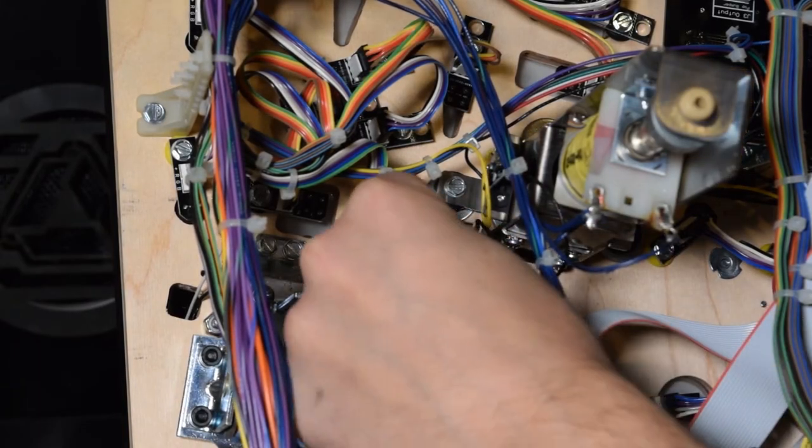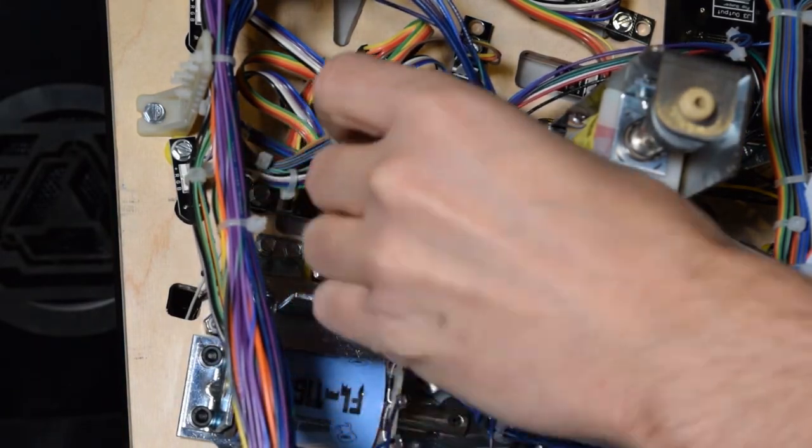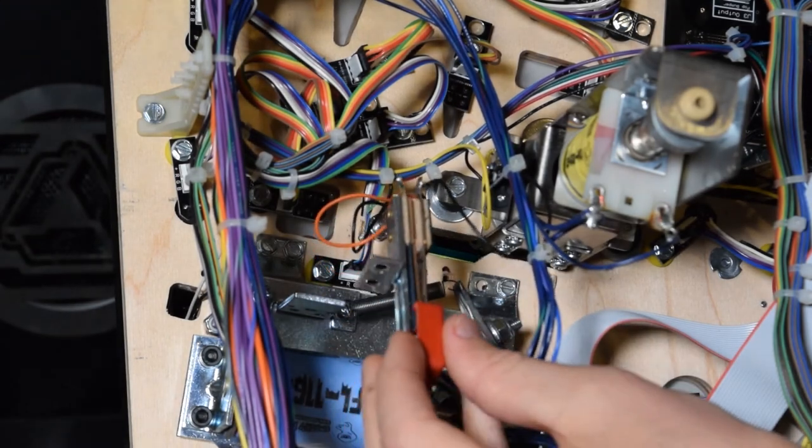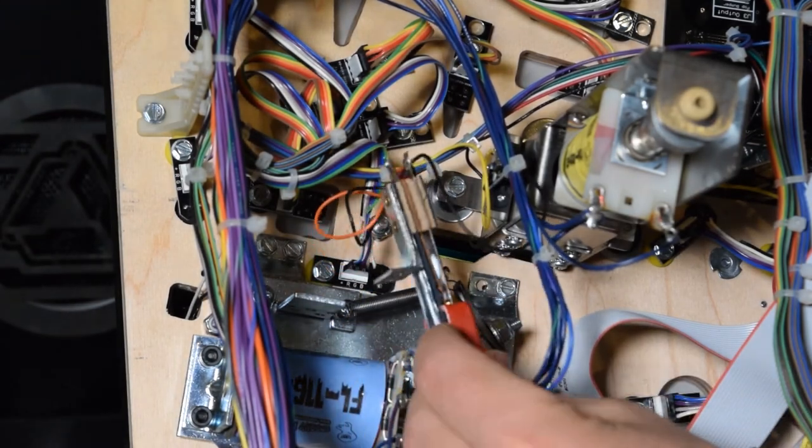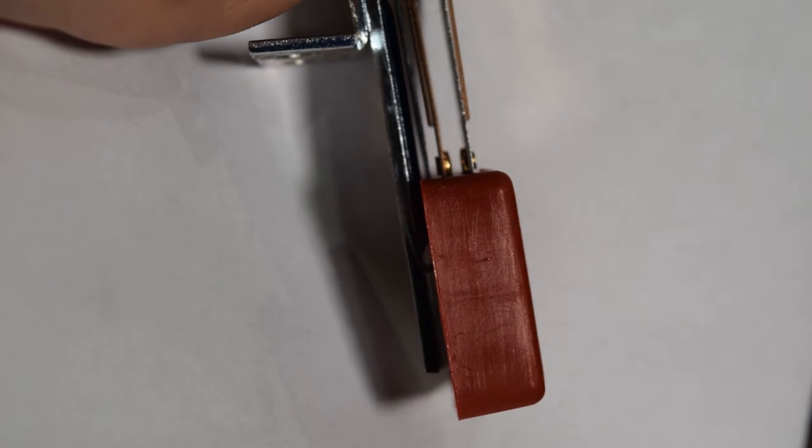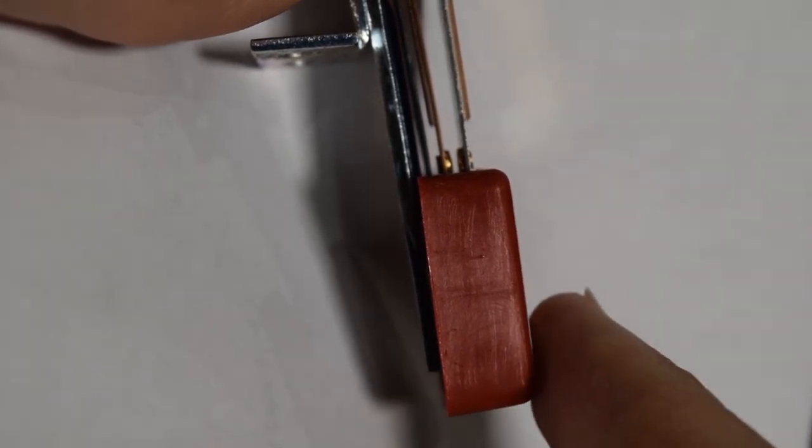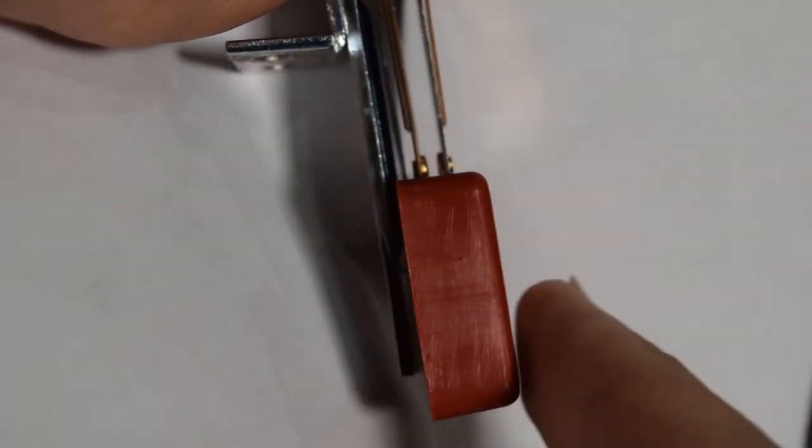Gently slide the target out of the playfield. Since the stand up target is soldered to the wiring harness, be gentle when removing and positioning the target to work on it. Here you can see the gap between the two contact points is pretty large and that is why it takes a lot of force to register a switch hit.